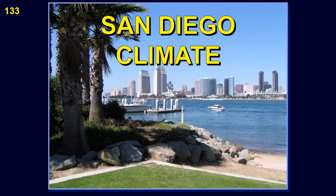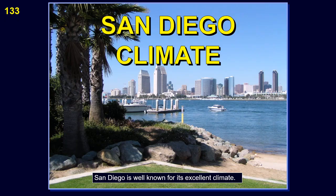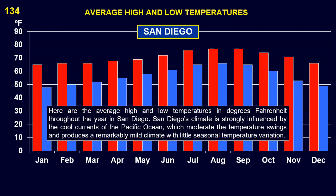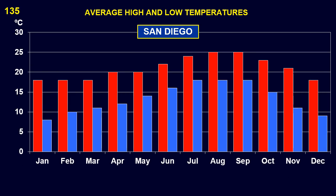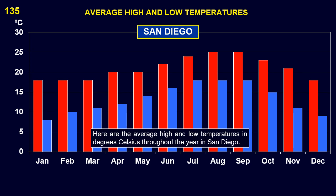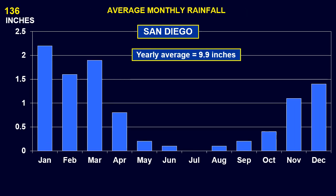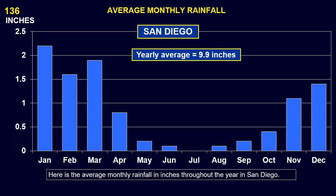San Diego is well known for its excellent climate. Here are the average high and low temperatures in degrees Fahrenheit throughout the year in San Diego. San Diego's climate is strongly influenced by the cool currents of the Pacific Ocean, which moderate the temperature swings and produce a remarkably mild climate with little seasonal temperature variation. Here are the average high and low temperatures in degrees Celsius throughout the year in San Diego. Here is the average monthly rainfall in inches throughout the year in San Diego; the yearly average is only 9.9 inches.